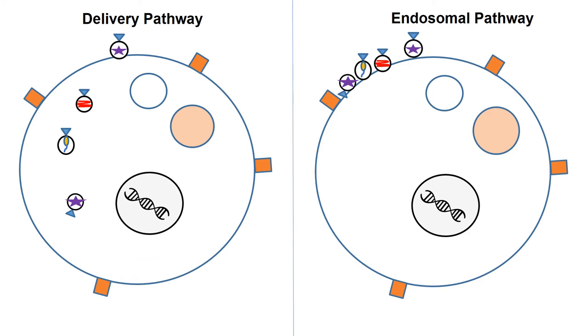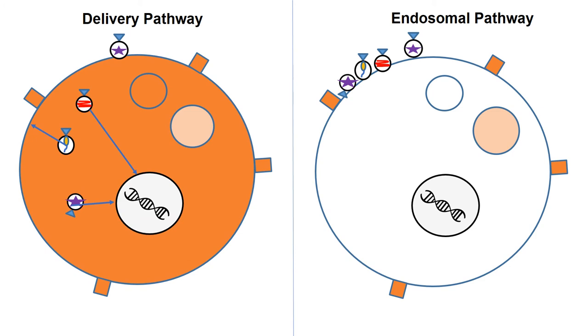Once the exosome enters the cell, there are two potential pathways it can take. First, on the left, is the delivery pathway. Here, the exosomes go to wherever the cargo is needed. The RNA and proteins may go to the nucleus. The phospholipid may go to the membrane, or any other organelle that needs the cargo.